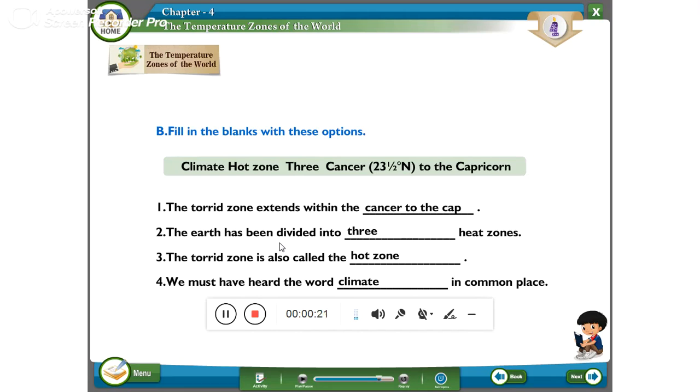The earth has been divided into dash heat zones. How many heat zones? Three heat zones. So, we have to write three heat zones.